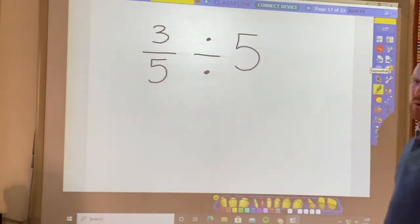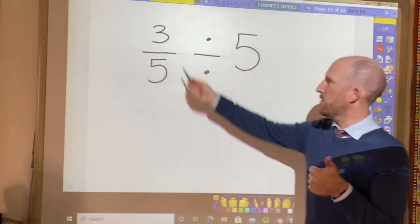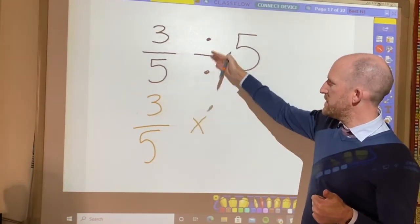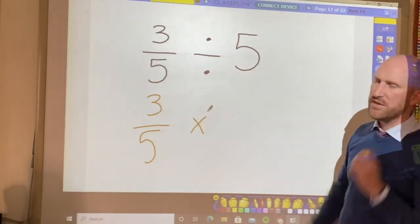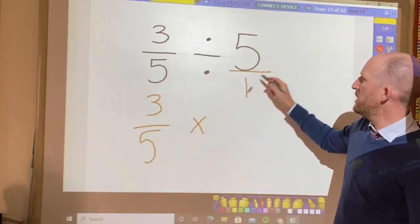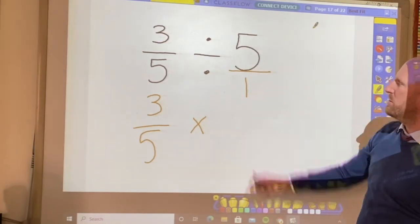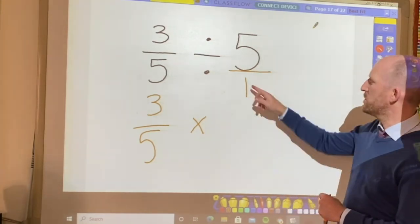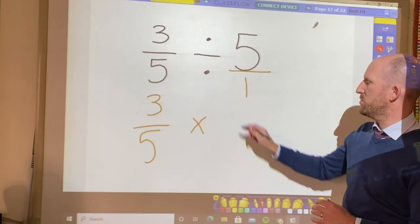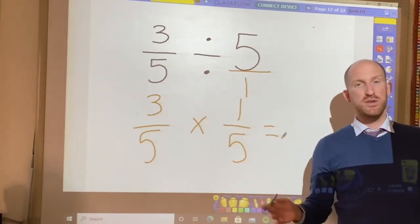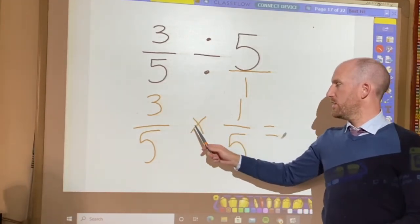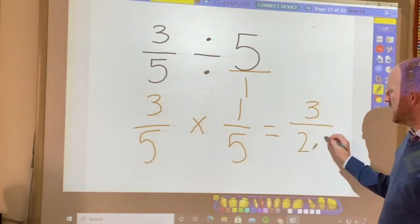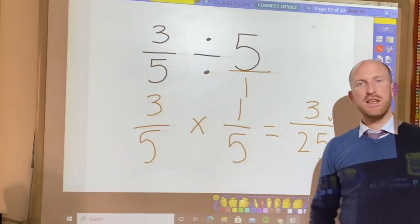Let's do one more example. Three fifths divided by five. So, remember, keep. I'm going to keep three fifths the same. I'm going to change. I'm going to change the divide sign to a multiply sign. Then I'm going to flip this number. But before I flip the number, I need to change it. I need to change it to an improper fraction. So, five whole ones is the same as five over one. Now, I can flip. So, one goes to the top and the five goes to the bottom. So, one fifth. Then all I need to do is multiply the answers. Three multiplied by one is three. Five multiplied by five is twenty-five. And there is another correct answer.